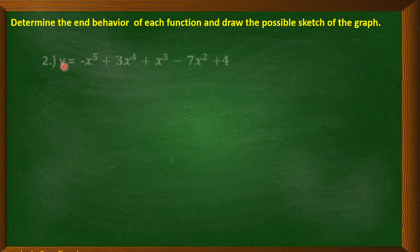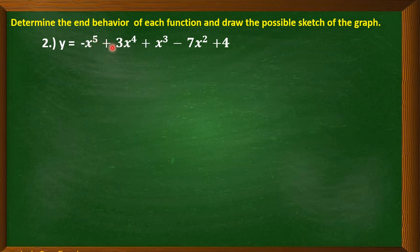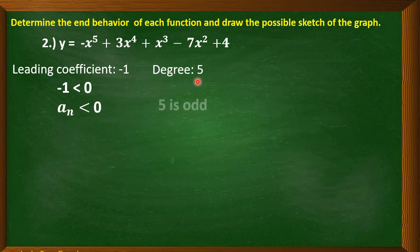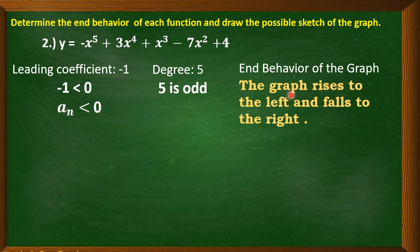Now the second example: y = -x⁵ + 3x⁴ + x³ - 7x² + 4. The leading coefficient is -1. Since -1 is less than 0, the leading coefficient is less than 0. The degree is 5, which is an odd number. This is the second case of the leading coefficient test. Therefore, the end behavior is: the graph rises to the left and falls to the right.